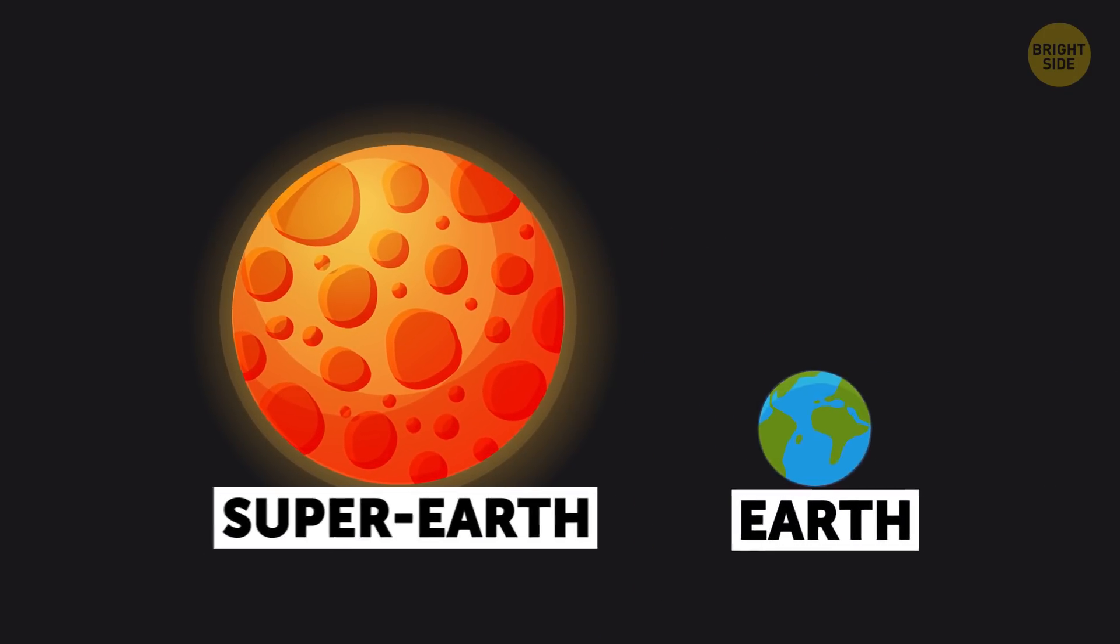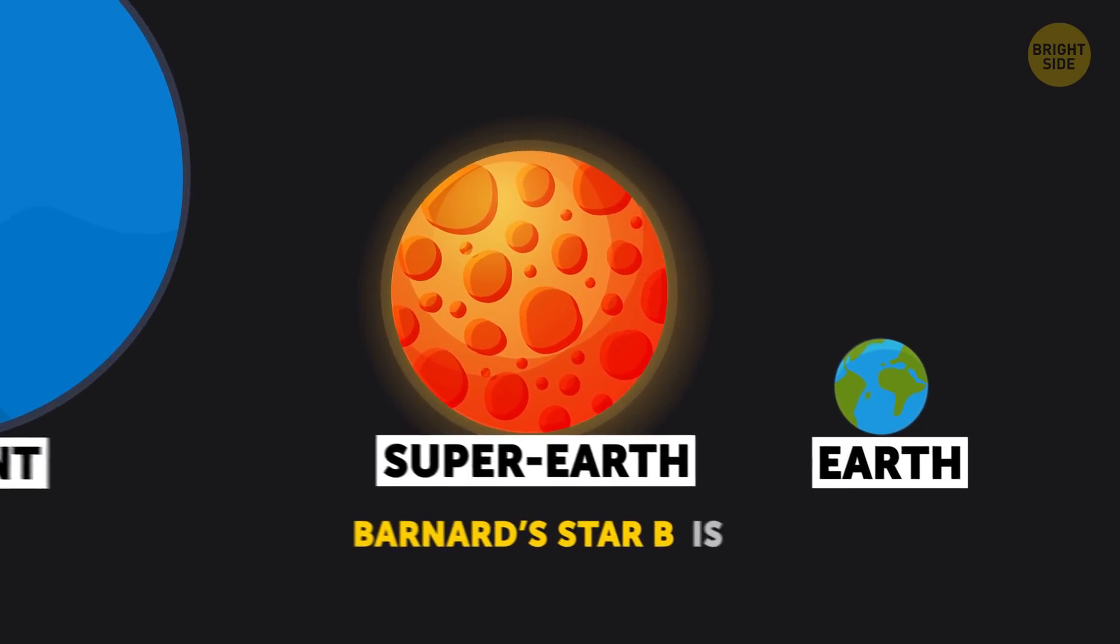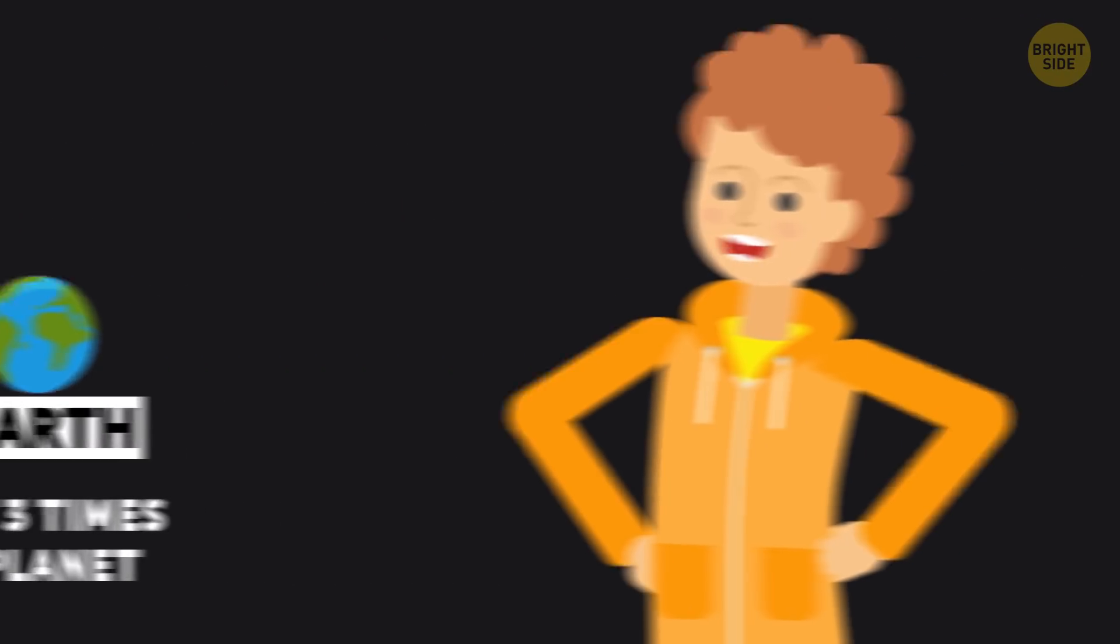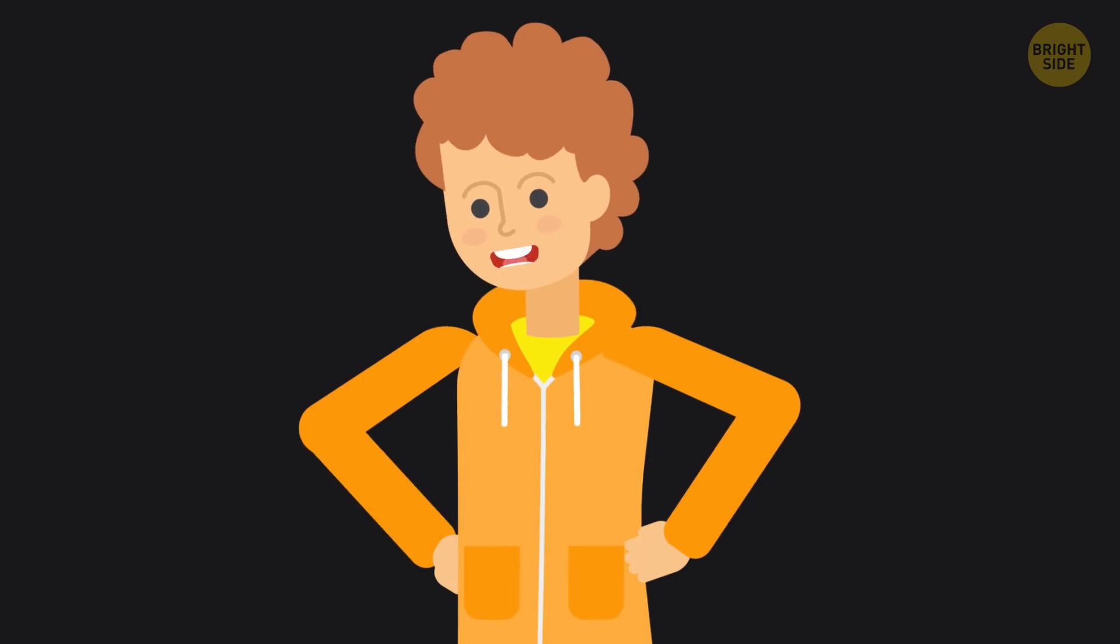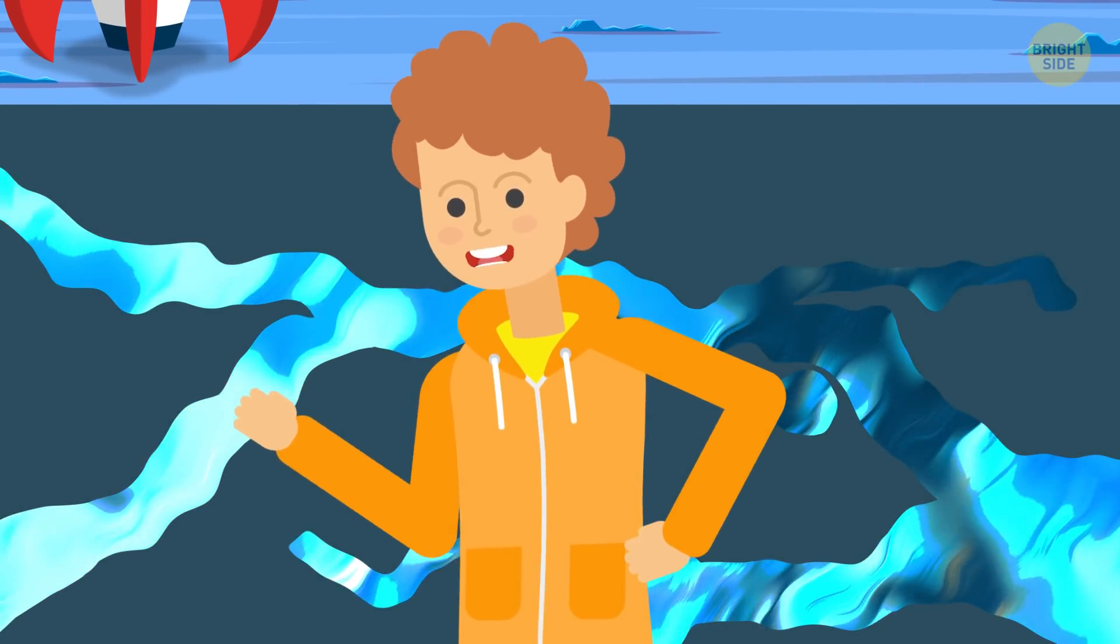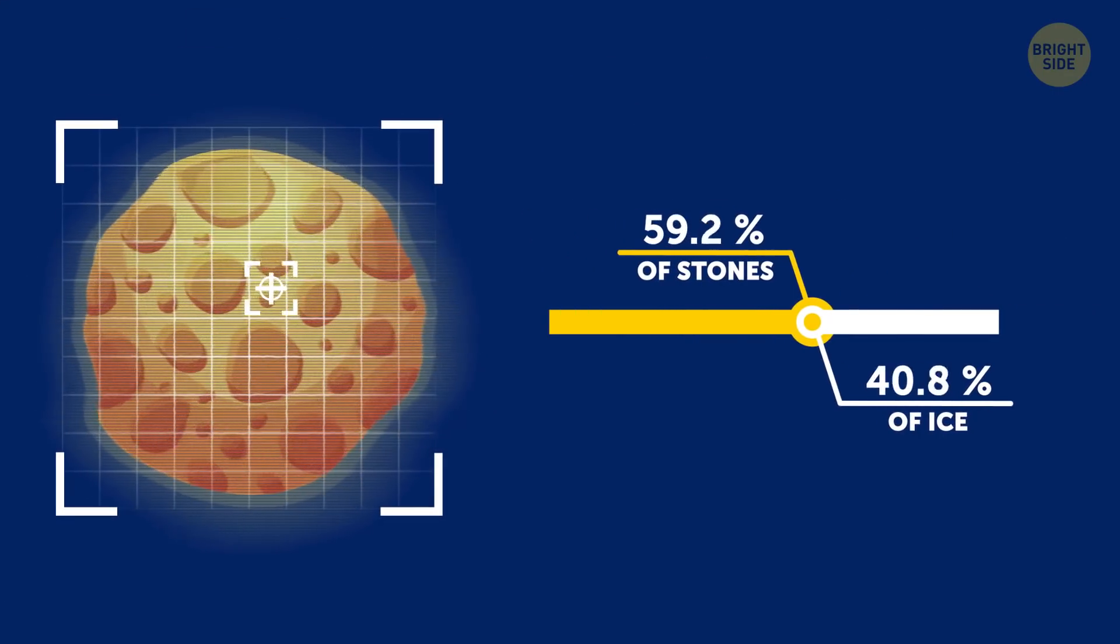But super-Earth is just the term astronomers use to describe only the size of a planet that's larger than the Earth but considerably smaller than ice giants like Neptune. As for Barnard Star B, it's about three times more massive than our planet, but it's nothing like it. And you already know that by now. Remember those seas of liquid methane? Yeah, it's all coming back to me now.